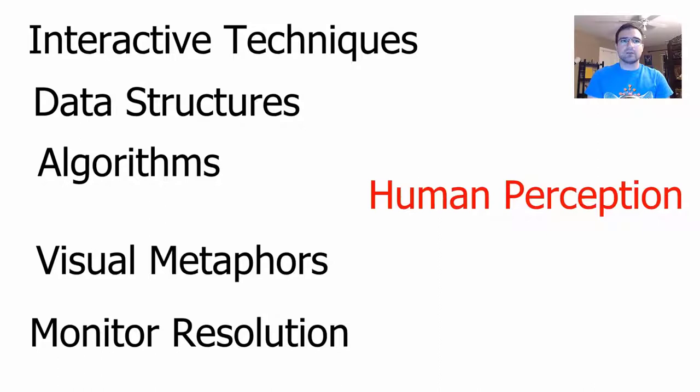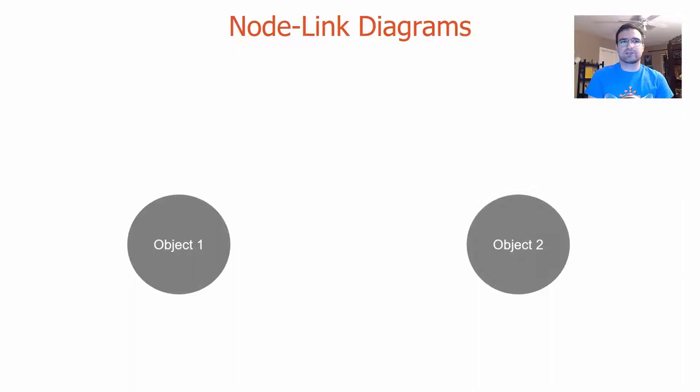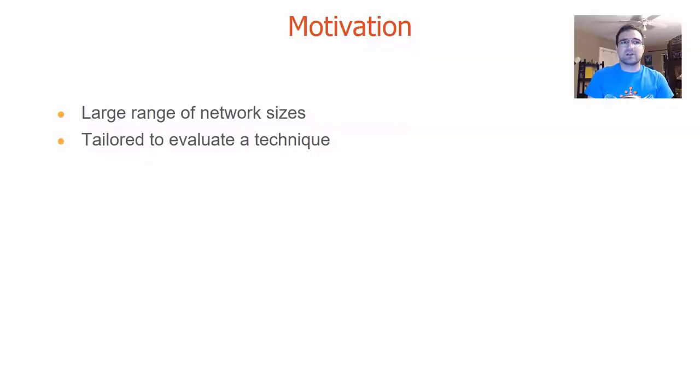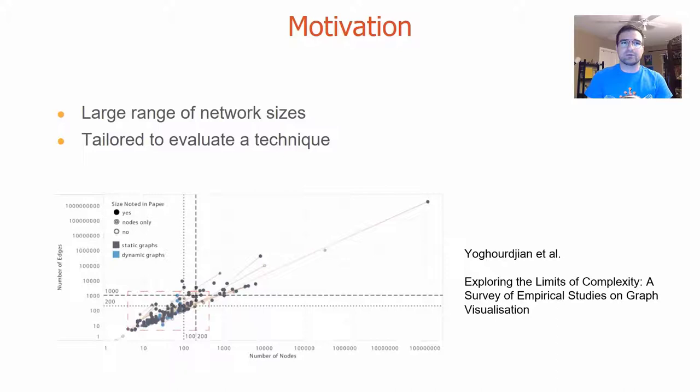Node-link diagrams are used to visualize relational data. Nodes are used to represent objects, and links are used to represent relationships between these objects. Similar to other visualizations, beyond a specific threshold, node-link diagrams become unreadable and resemble hairballs. There has been a lot of research exploring the effects of layout features for node-link diagrams on readability and task effectiveness. Yorujian et al present an exhaustive survey of such studies.